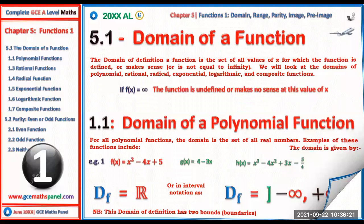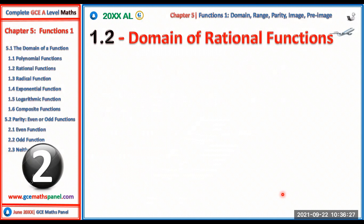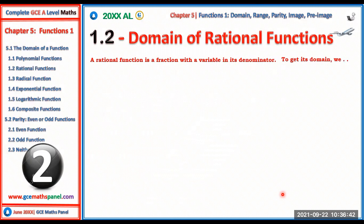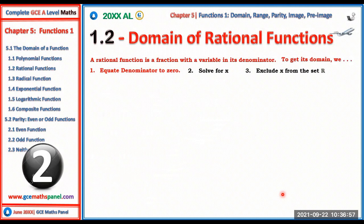Next we look at the domains of rational functions. A rational function is a fraction with a variable in its denominator. To get the domain there are three steps: first, inequate the denominator to zero (the denominator should not equal zero); second, solve for x; and third, exclude that value of x from the set of real numbers.